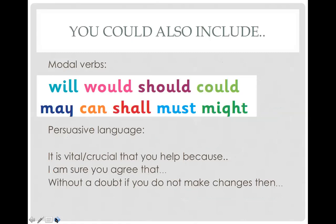There are a couple of other things I want you to include, although I've not listed them in the success criteria. I think it's important that you think about modal verbs. In parts of the letter you're actually trying to persuade the humans to think about their actions, so you might want to use modal verbs like: 'You must consider the damage that you do,' 'You can make a change,' 'You may not realize what you're doing, but it has a really bad effect,' 'If you change, it will make a difference.' And then of course some persuasive language — I've included a few sentence starters: 'It is vital,' 'It is crucial that you help,' 'I'm sure that you agree,' 'Without a doubt, if you do not make changes then...' That will make your last paragraph quite powerful.